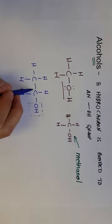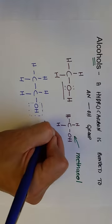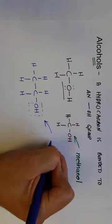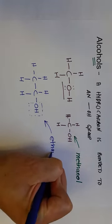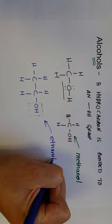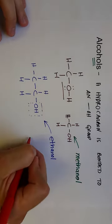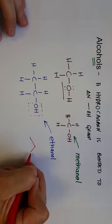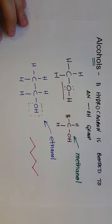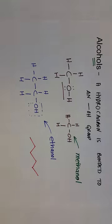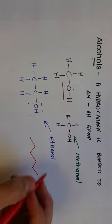And the two-carbon compound — ethane — becomes ethanol. We can even have larger hydrocarbons with alcohol groups, and if that alcohol group is on a different carbon, we would name it using the numbering system.